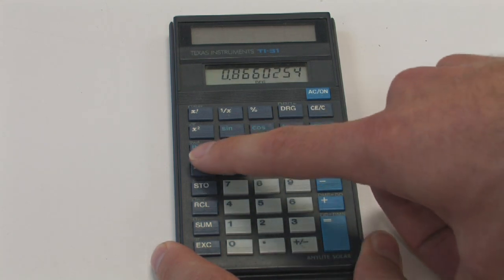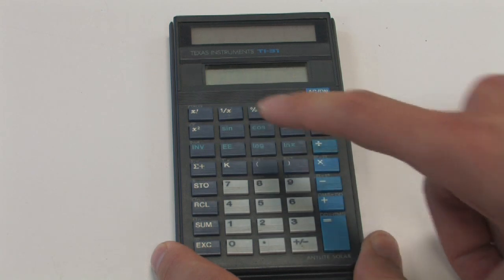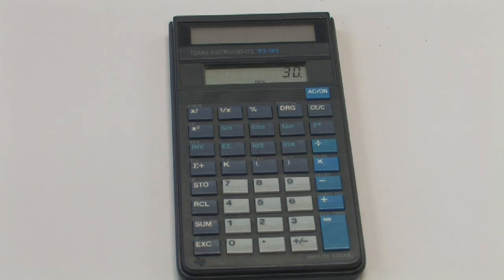and then we do inverse cosine. That will give us 30 degrees.